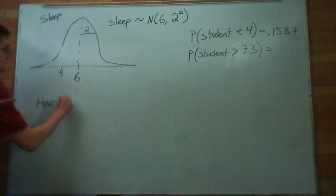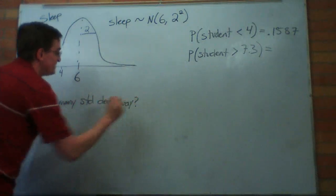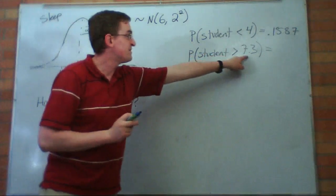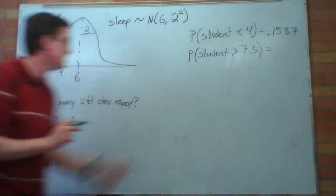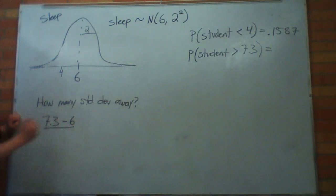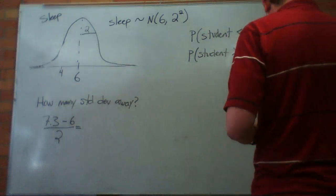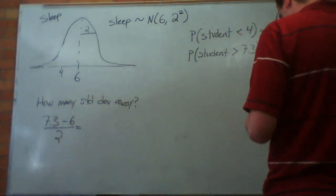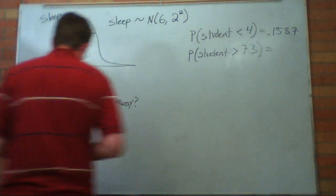How many standard deviations away? How do you calculate that? Well, let's see how far is 7.3 from 6. 7.3 minus 6, that's how far away the data that we're interested in, this 7.3 is. But we want to know how many standard deviations. So we're going to divide that by 2. That tells us our z-score of how many standard deviations away is. So 7.3 minus 6 divided by 2 is 0.65.